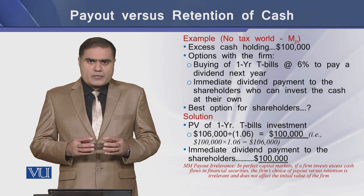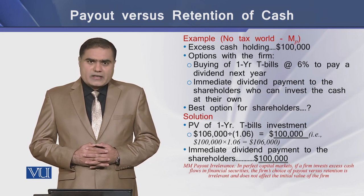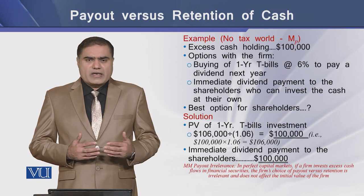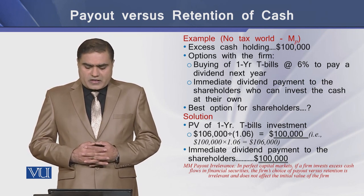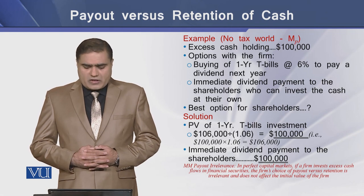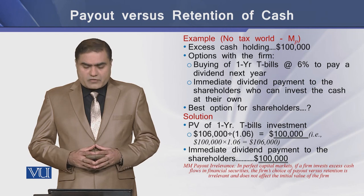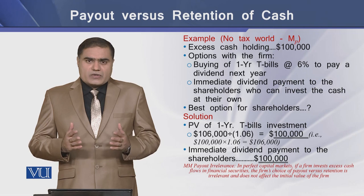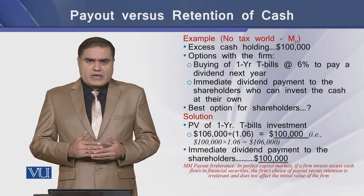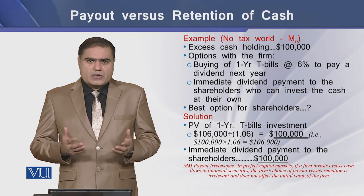The firm has two options for using this excess cash. The first option is to buy one-year treasury bills and earn a 6% rate of interest, retain it, and pay the shareholders after one year as dividend. The second option is that the firm can immediately pay out this excess cash to shareholders as dividend, and the shareholders will be at liberty to invest this amount on their own. The present value of option 1 using T-bill proceeds equals $100,000, and the immediate dividend payment is also equal to $100,000.